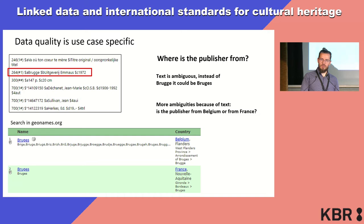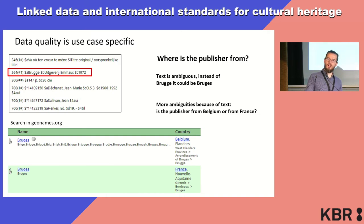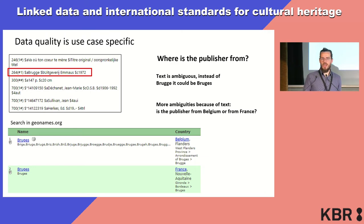Then we run into issues. If you go to geonames.org and you want to find 'Brugge', you all of a sudden find one in Belgium and one in France. Which one is it? Is the publisher from France or from Belgium? It's not clear, because the text is ambiguous.